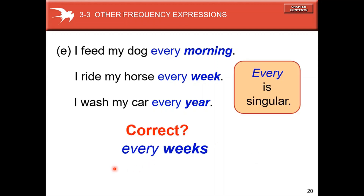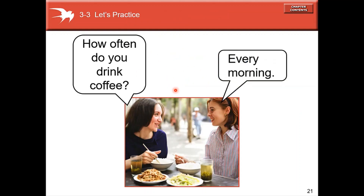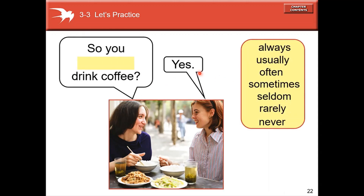You can ask your friends: how many times a day, a week, a month, or a year? For example: 'I feed my dog every morning,' 'I ride my horse every week,' 'I wash my car every year.' Note: 'every week' — is this correct? It is incorrect because 'every' is singular, so you say 'every week,' not 'every weeks.' If the answer is every morning, then the frequency adverb is 'always.'